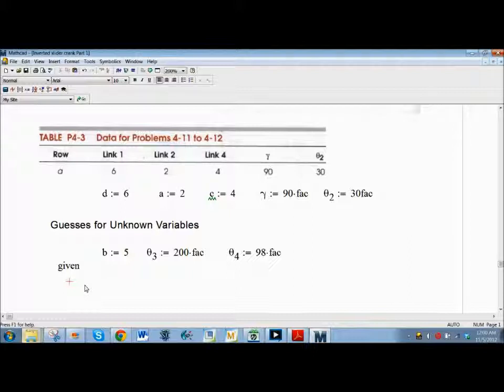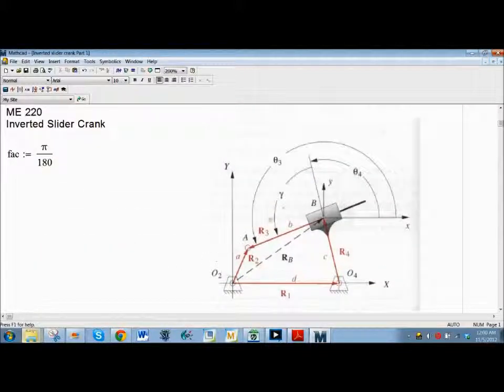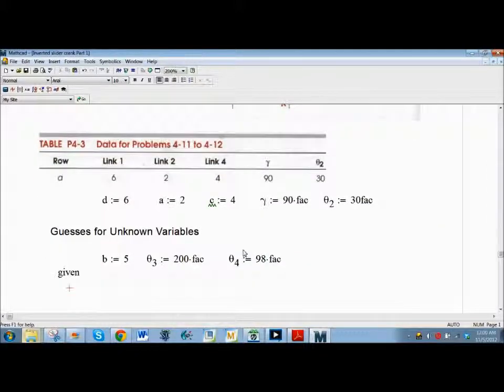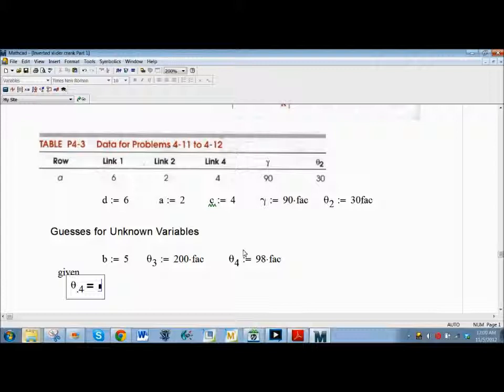So what do I know? Well, let's, we know that theta 3 and 4 are related here by gamma. So we could say that theta 3 minus gamma equals theta 4, or whatever, theta 4. Now you have to push control equals because this is the equivalency equals, the one that you're used to in all of your math life. Theta 4 equals theta 3 minus gamma.